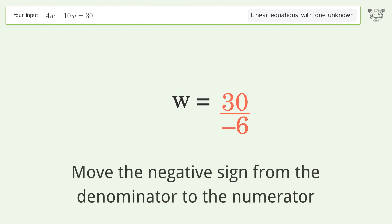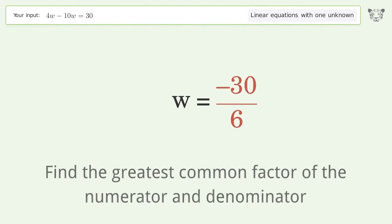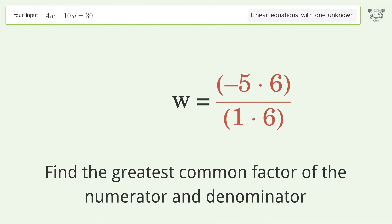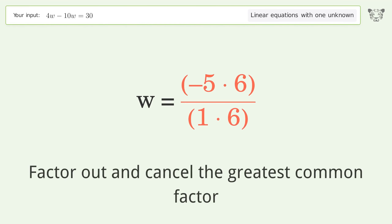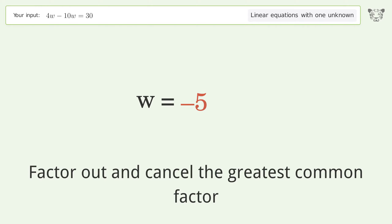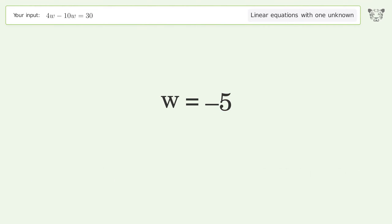Move the negative sign from the denominator to the numerator. Find the greatest common factor of the numerator and denominator, then factor out and cancel the greatest common factor. The final result is w equals negative 5.